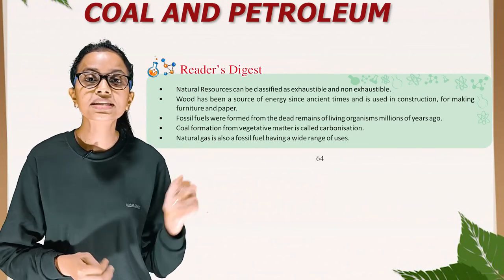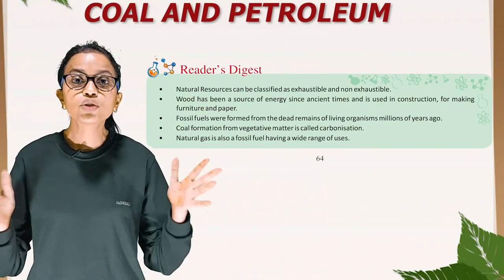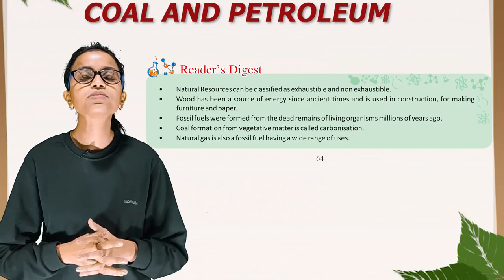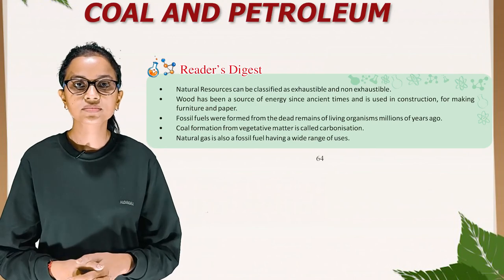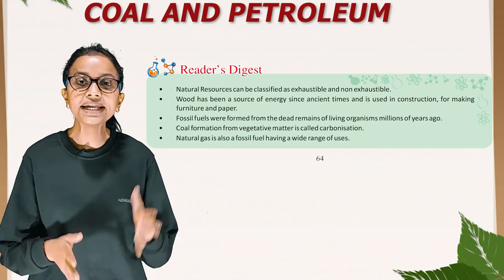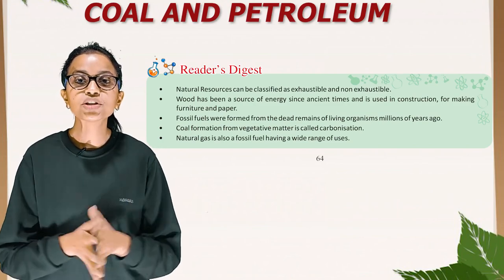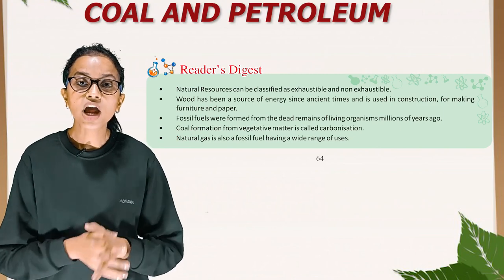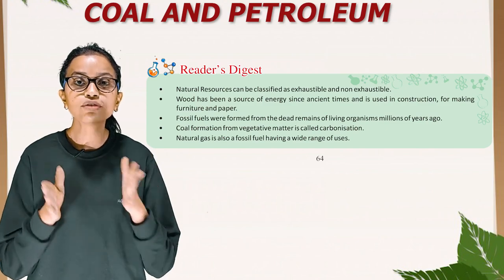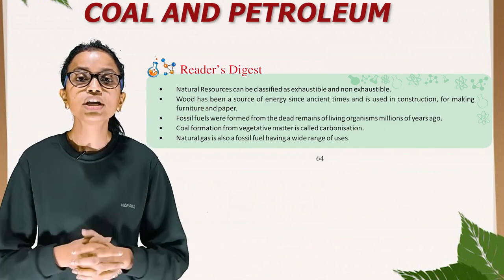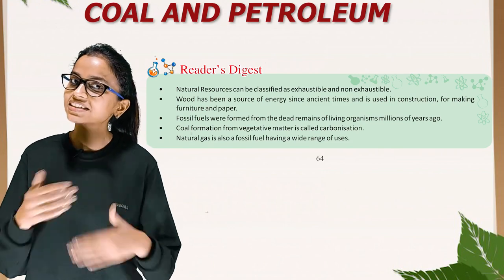Natural resources can be classified as exhaustible and non-exhaustible. Wood has been a source of energy since ancient times and is used in construction, for making furniture and paper. Fossil fuels were formed from the dead remains of living organisms millions of years ago. Coal formation from vegetative matter is called carbonisation. Natural gas is also a fossil fuel having a wide range of uses. That's all for today, students — bye, we'll meet in the next class.